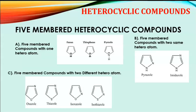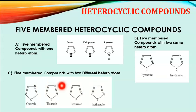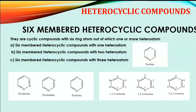The third classification of five-member heterocyclic compounds is five-member compounds with two different heteroatoms — single cyclic rings containing two different heteroatoms. Examples include oxazole, thiazole, isoxazole, and isothiazole. Oxazole contains one oxygen and one nitrogen. Thiazole contains one sulfur and one nitrogen — these two different heteroatoms place it under five-member compounds with two different heteroatoms.